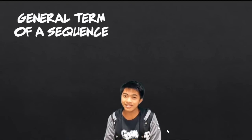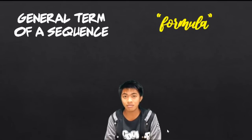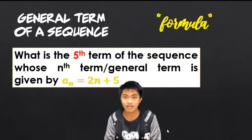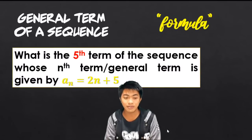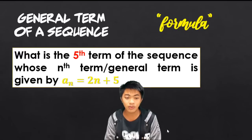When we say general term of a sequence, this is a formula for us to get any missing term in a sequence. For example, we have this problem: What is the fifth term of the sequence whose nth or general term is given by a sub n equals 2n plus 5?